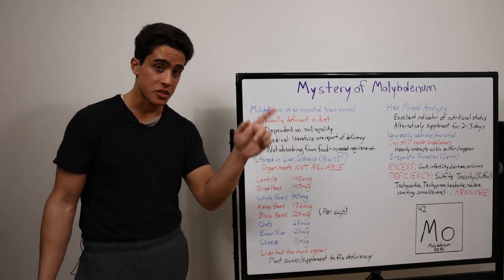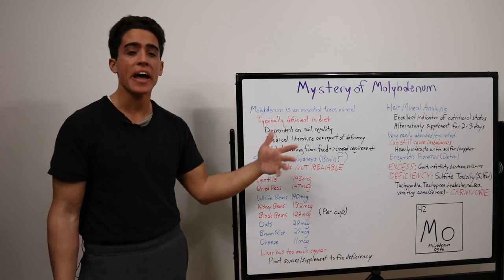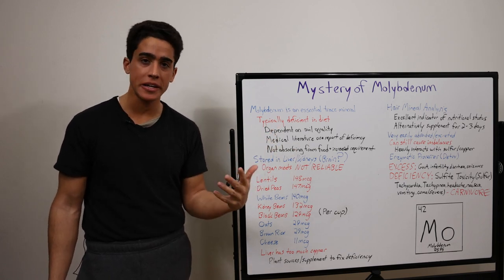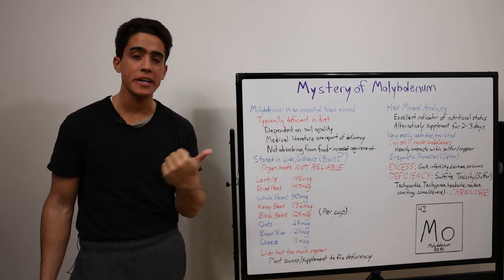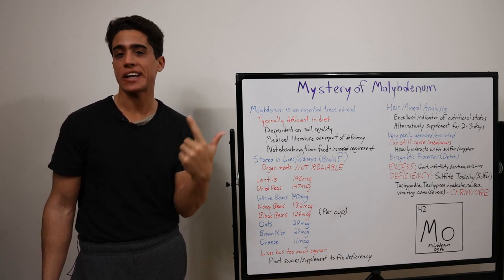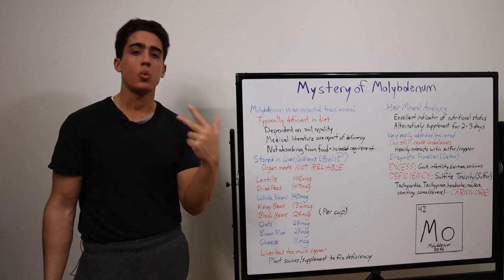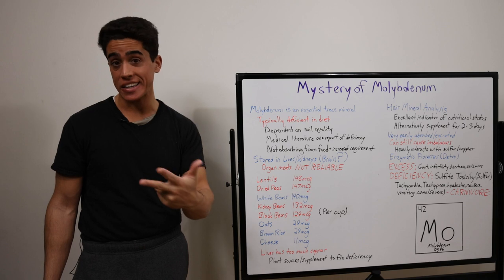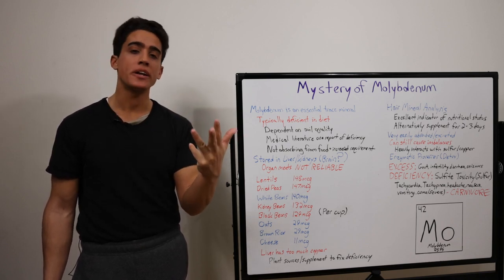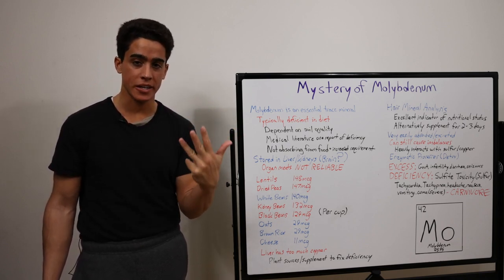And molybdenum, just like manganese, is vital for several essential enzymes in the body. One breaks down sulfites. Another breaks down toxic aldehyde, such as alcohol. One more breaks down purine xanthine. And the final one is a mitochondrial cell antioxidant.